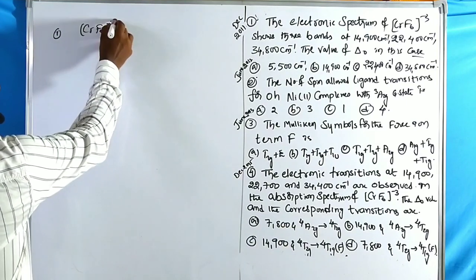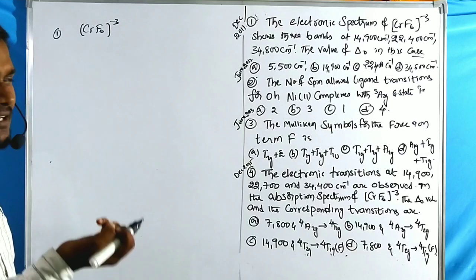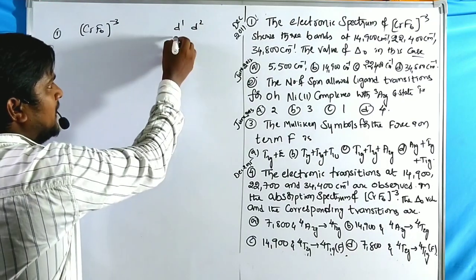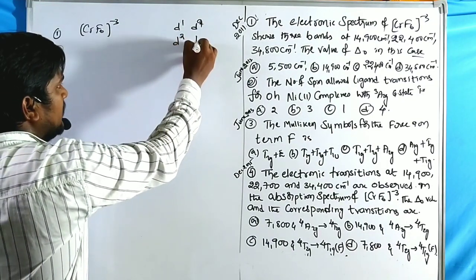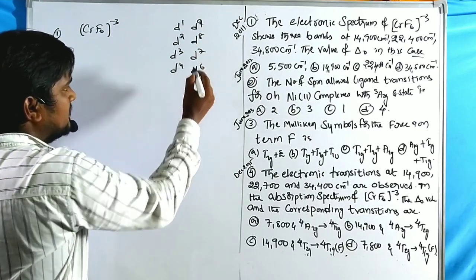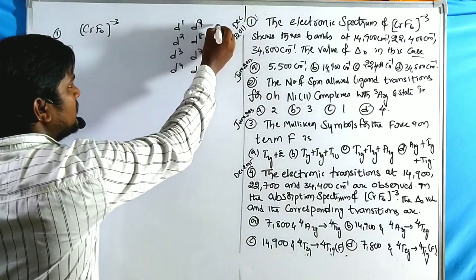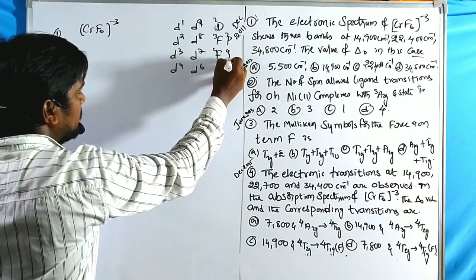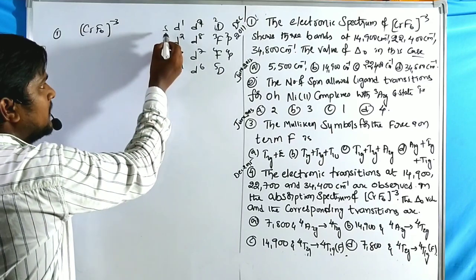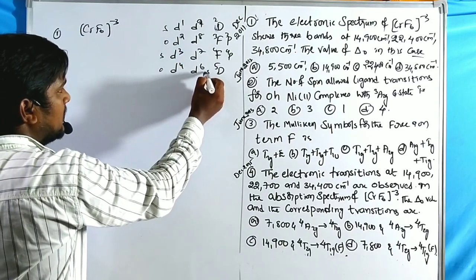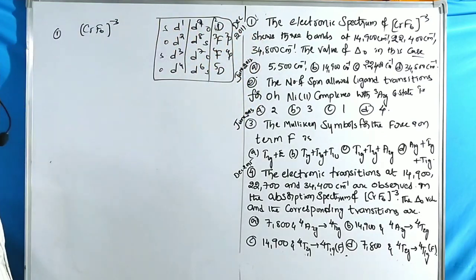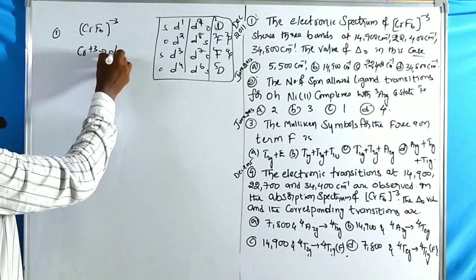For CrF₆³⁻, since three transitions are given, it relates to Orgel diagrams. A simple hint for Orgel diagram configurations: d1, d9, d2, d8, d3, d7, d4, d6. The terms are 2D, 3F, 3P, 4F, 4P, 5D — following a similar-opposite-similar-opposite pattern for spectral splitting of d-terms and f-terms.